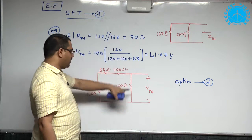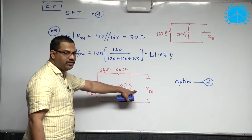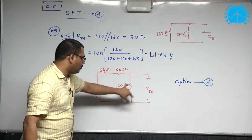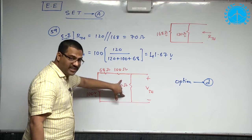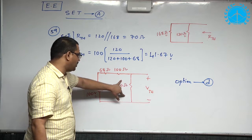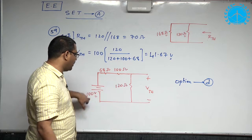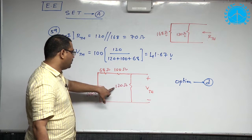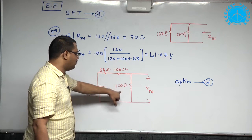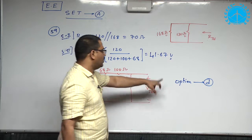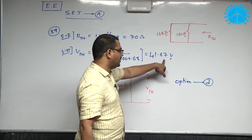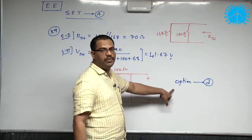And Thevenin's voltage by voltage division rule — the open circuit voltage across 120 itself is the Thevenin's voltage, which is total voltage into same by sum, which is 41.67. So, option B.